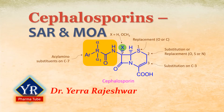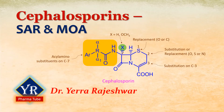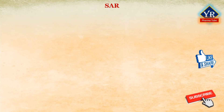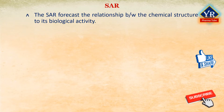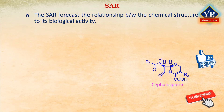In this lesson, we shall try to understand the structure activity relationships and the mechanism of action of cephalosporins. The structure activity relationship of cephalosporins forecasts the relationship between the chemical structure of cephalosporins to its biological activity. The analysis of structure activity relationship enables the determination of the chemical groups responsible for evoking a target biological effect in the organism.